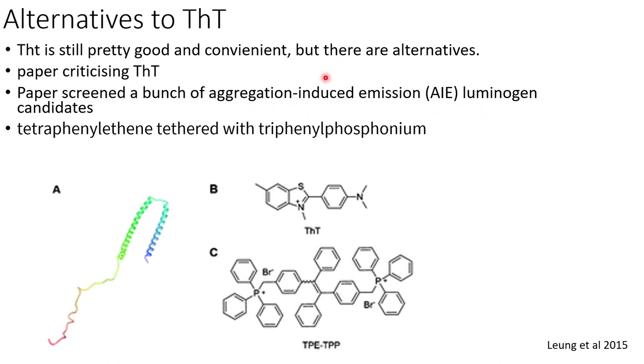But this paper they basically screened a bunch of aggregation-induced emission luminogen candidates, basically candidate molecules that give similar fluorescence. This is alpha-synuclein protein over here, and they basically found this alternative called tetraphenylethene that's tethered with triphenylphosphonium.